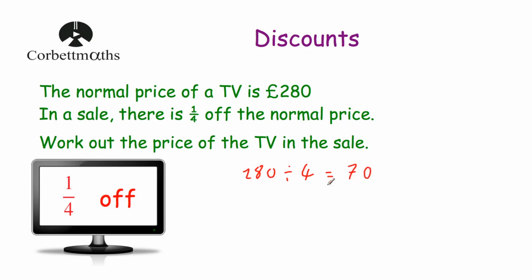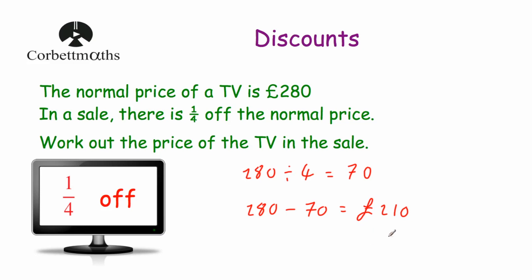So there's a discount or saving of £70. We've been asked to work out the price of the TV in the sale, so we need to take our £280 and take away the £70. 280 take away 70 would be £210. So in the sale the TV will cost £210 rather than the normal price of £280.